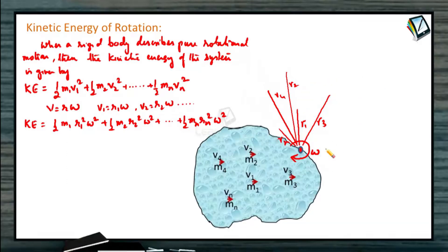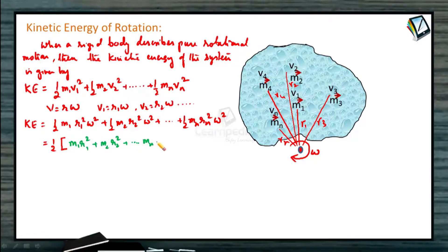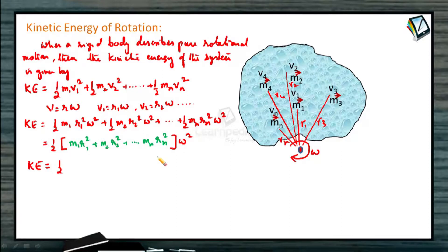Since it is a pure rotation about this point with angular velocity ω, the body is revolving about point O as a whole. Angular velocity of all particles is the same, so we can write this formula as half of (m1 r1² + m2 r2² + ... + mn rn²) times ω². This quantity in the bracket is called rotational inertia or moment of inertia of the system of particles.